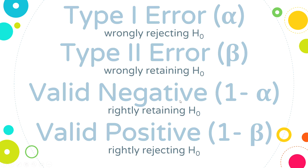A valid negative would be where I retain the null and I am correct to do that. So the null is that he's sober; if I keep that idea when he really was sober, I let an innocent person drive away. If I rightly reject the null — the null means sober, so rejecting it means not sober — I conclude he's not sober, and I am correct in doing that, so I arrest a guilty person.